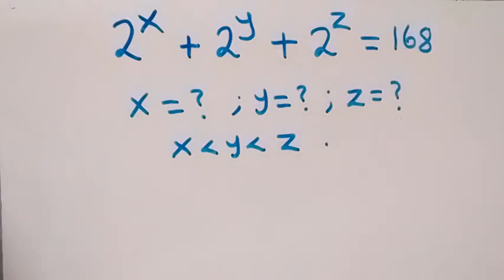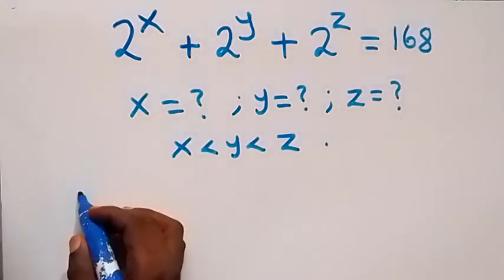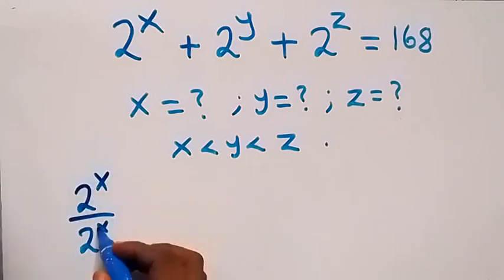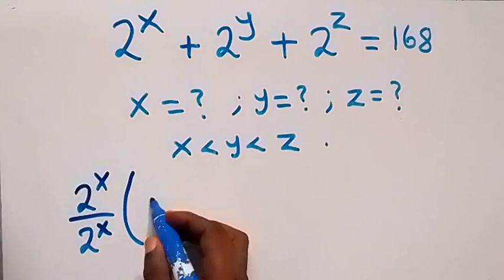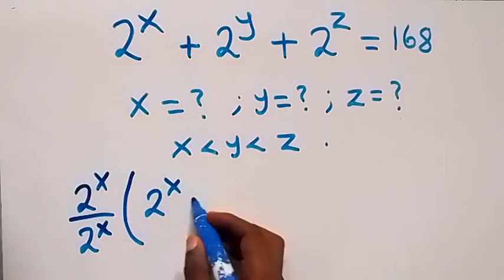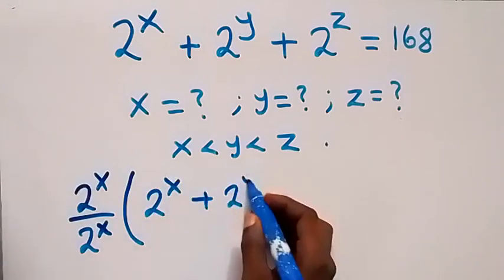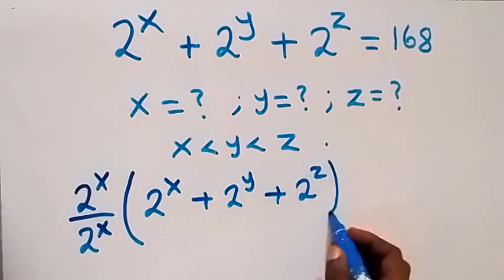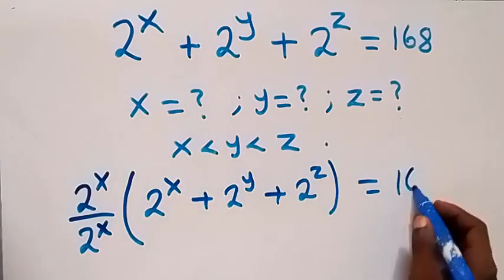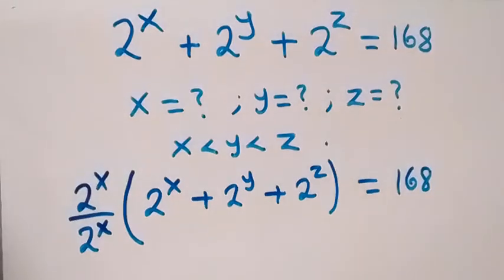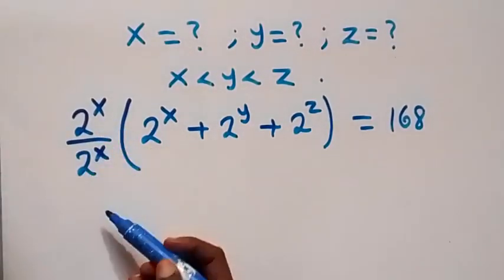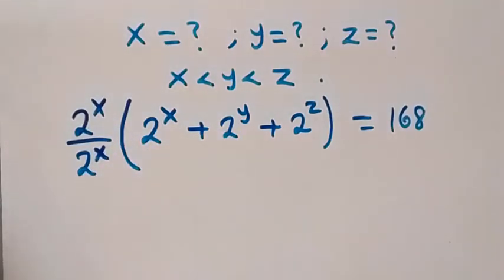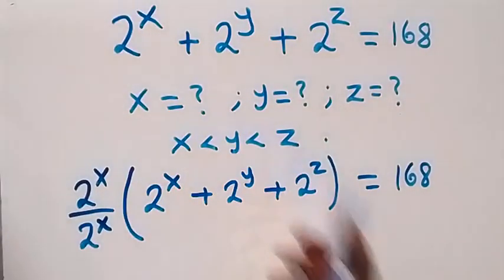From here we can write this as 2 raised to power x divided by 2 raised to power x, then multiply by 2 raised to power x plus 2 raised to power y plus 2 raised to power z equals 168. We have not changed anything because that factor is still 1, so it's the same equation we have.